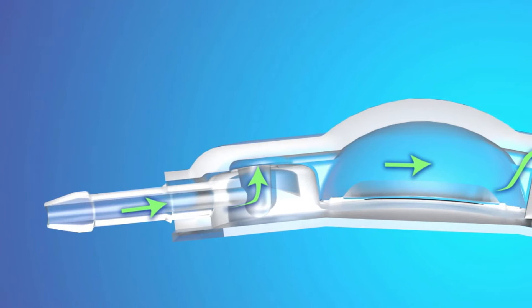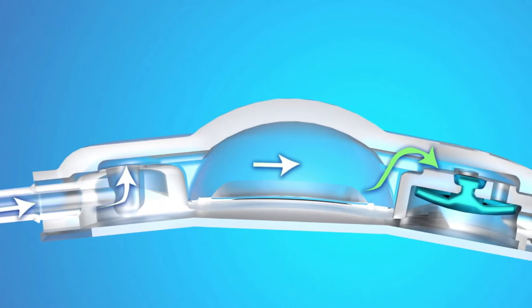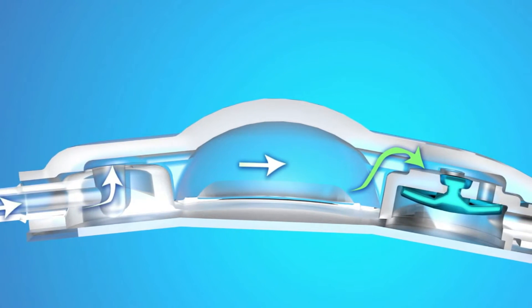As CSF flows through the Delta Valve, it enters the inlet connector, flows by the proximal occluder, and into the central reservoir. For sampling CSF, the reservoir dome can be accessed using a 25 gauge or smaller non-coring needle.